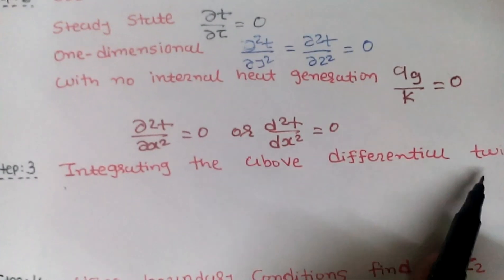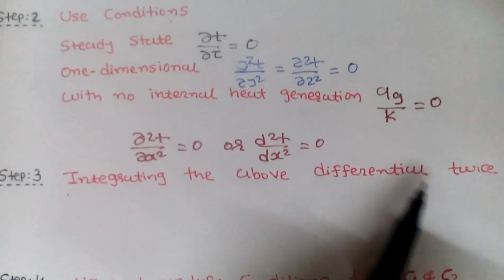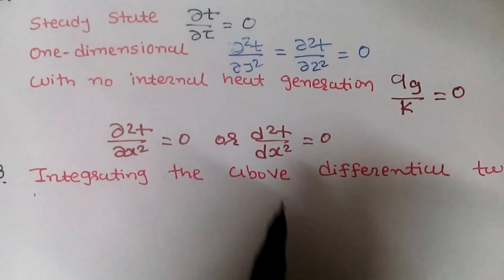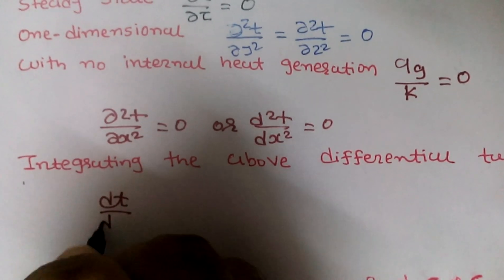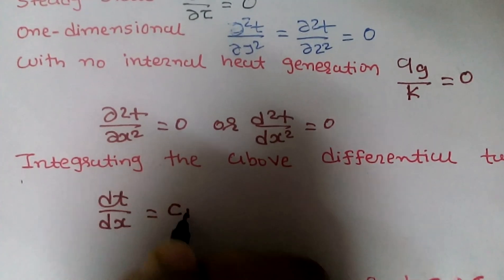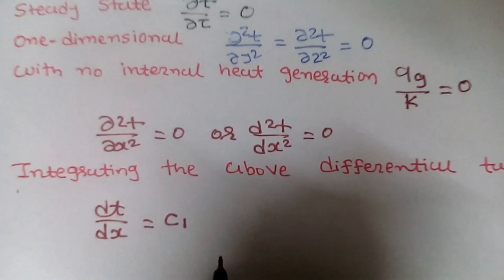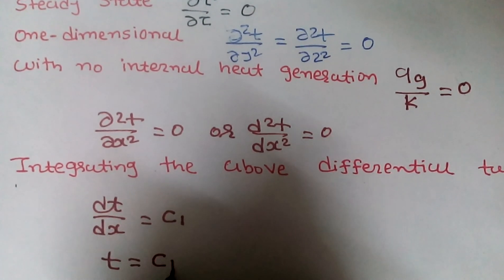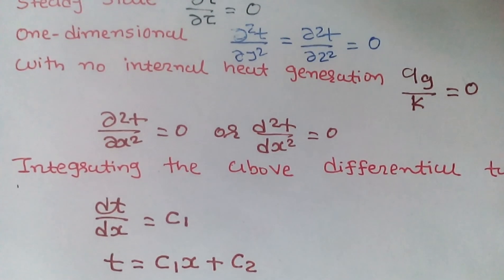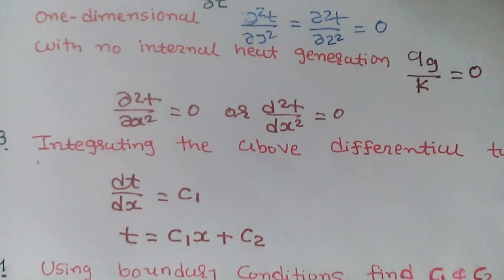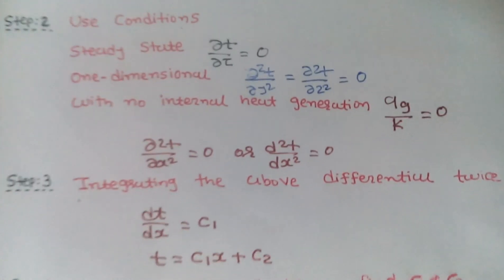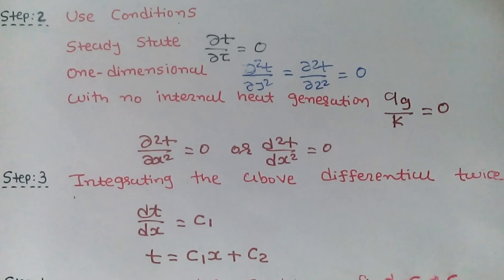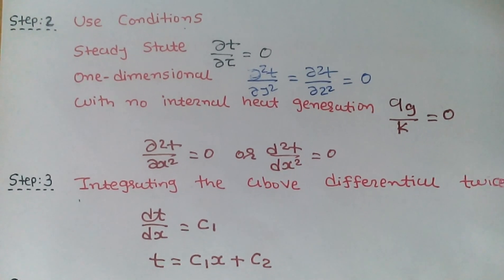In step three, integrating the above differential equation twice. The first integration gives dT/dx = C1. The second integration gives T = C1·x + C2, which is the general solution for temperature distribution in the plane wall.